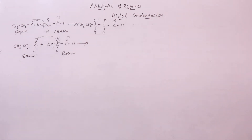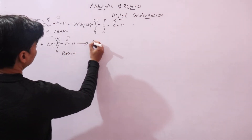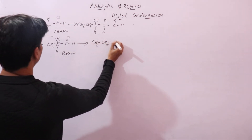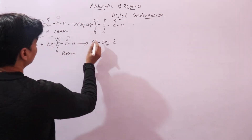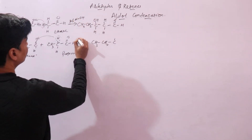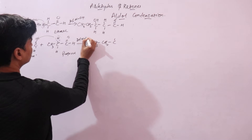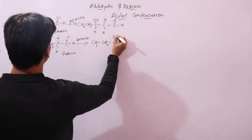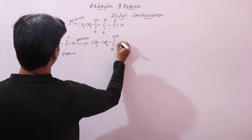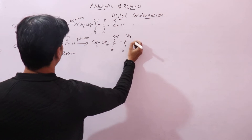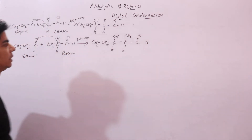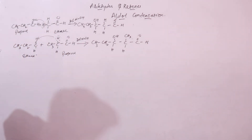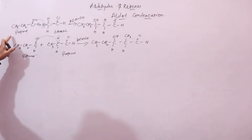So we now have two cross-condensation products. Additionally, two molecules of ethanol will also react with each other, and two molecules of propanol will also react with each other, giving two more different aldol products. This alpha hydrogen from ethanol attacks another molecule of ethanol in presence of dilute sodium hydroxide to form yet another beta-hydroxy aldehyde.